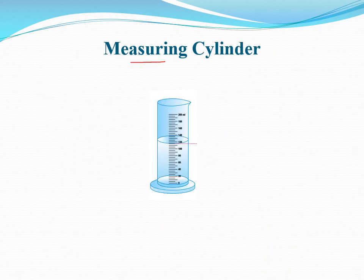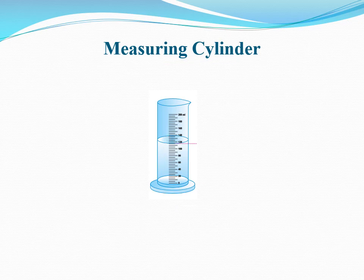Let's talk about the measuring cylinder. The measuring cylinder is a glass or transparent plastic cylinder. It has a scale along its length that indicates volume in milliliters as shown in the figure. The total capacity of this measuring cylinder is 200 ml. Looking closely at the divisions, the minimum division taken by this measuring cylinder is 5 ml, so 5 ml is the least count of this measuring cylinder.